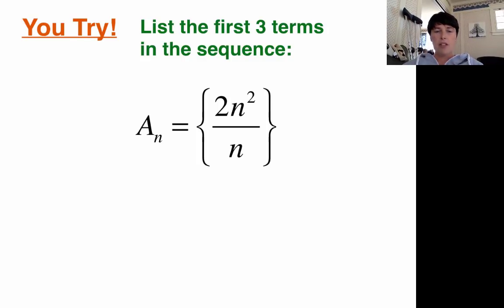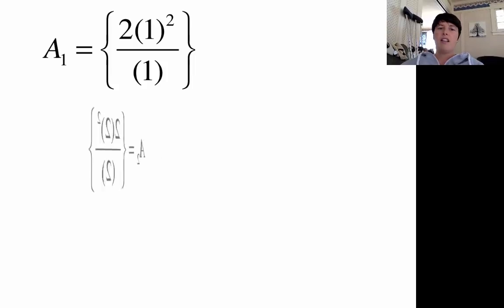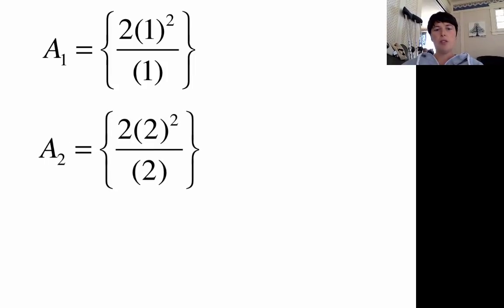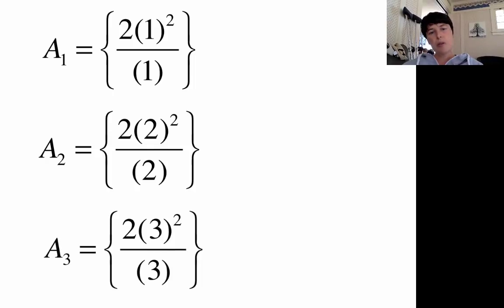Okay. All right. Let's check some answers. Hopefully you're unclicking the pause button. You've already done your work. Now you're ready to see if you did it correctly. So find the first three terms. That means we want a 1, 2, and 3. So a sub 1 is going to look like this: It's going to be 2 times 1 squared over 1. A sub 2 is going to be 2 times 2 squared over 2. A sub 3 is going to be 2 times 3 squared over 3.